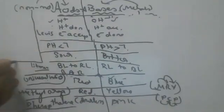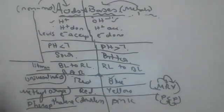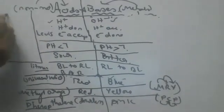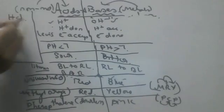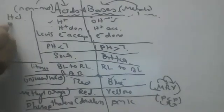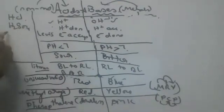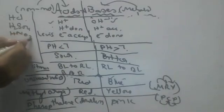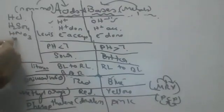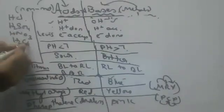Some of the famous acids are HCl (hydrochloric acid), H2SO4 (sulfuric acid), HNO3 (nitric acid), and H3PO4 (phosphoric acid).